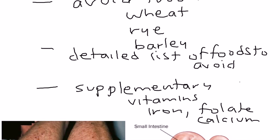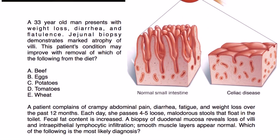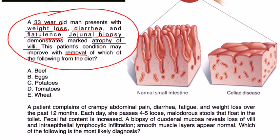Here's the first vignette: a 33-year-old man presents with weight loss, diarrhea, and flatulence. Jejunal biopsy demonstrates marked atrophy of villi. The patient's condition may improve with the removal of which of the following from the diet? This summarizes celiac disease nicely — you want to avoid gluten, and gluten is contained in wheat, barley, and rye. Wheat is listed as the answer.